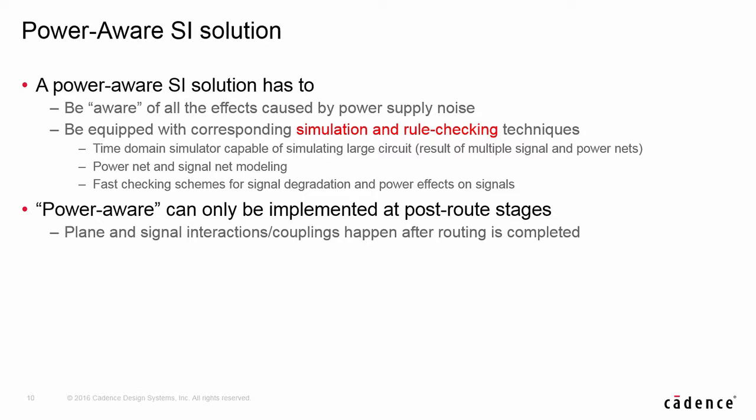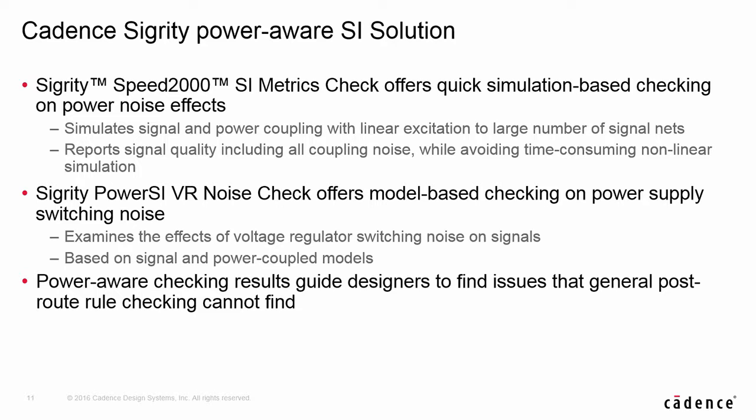Then how do we check the problems? From the previous discussion, we can see that our only option is to go with simulation and modeling on power and signals. But performing SSN-type simulation in a post-route environment with non-linear models requires special field solvers to handle power planes and shapes, and therefore has performance issues — this cannot be used for checking purposes. Designers need fast checking tools to quickly identify potential design issues. Do we have a tool for power-aware design checking? The answer is yes: Cadence Sigrity provides SI metrics check for the complete power-aware solution.